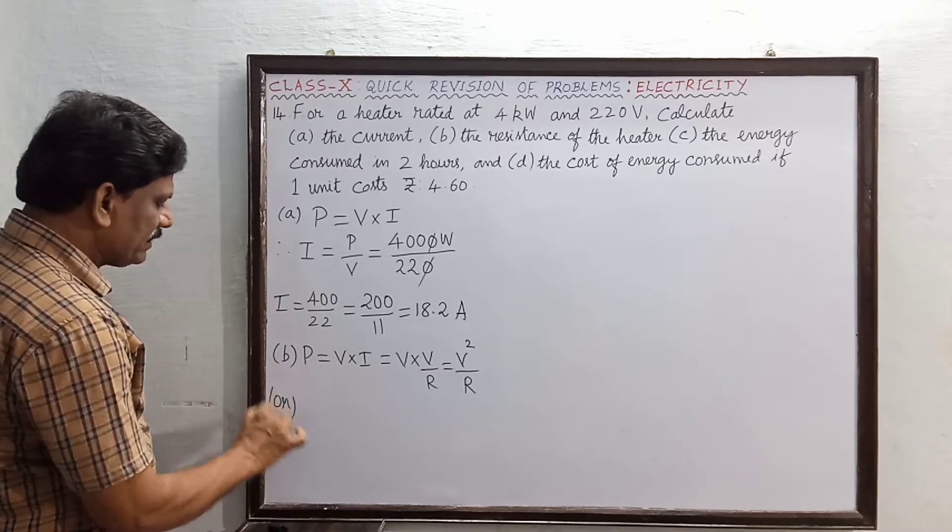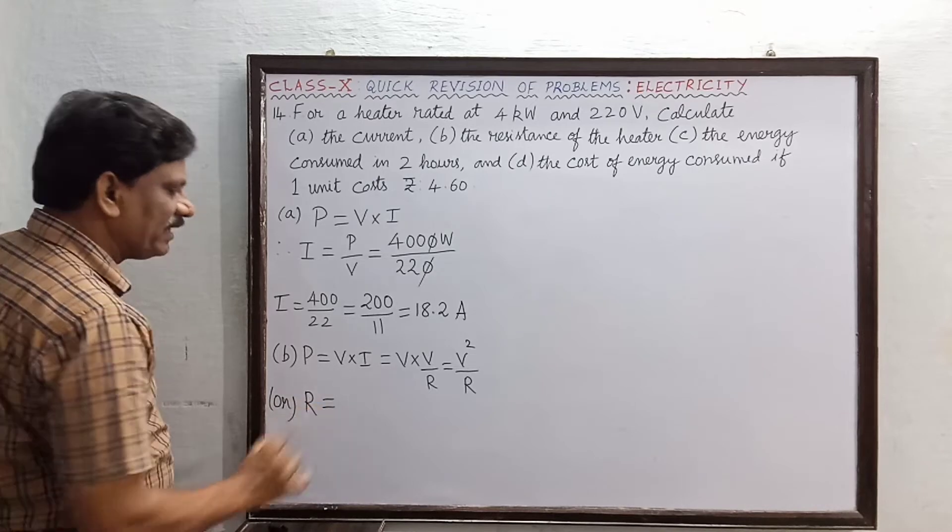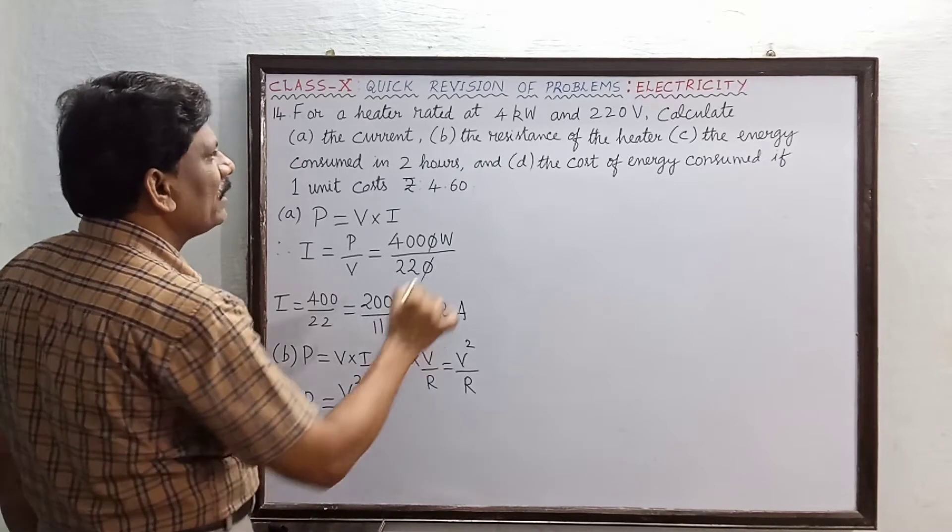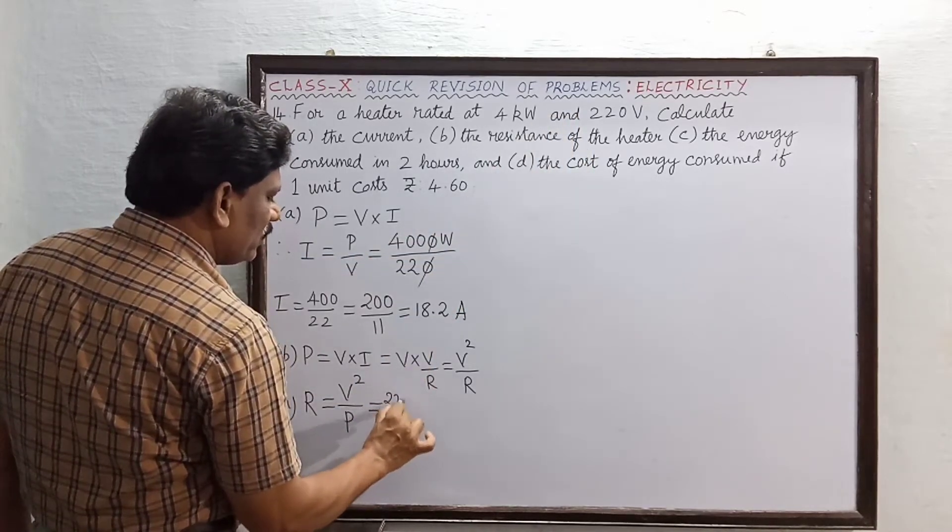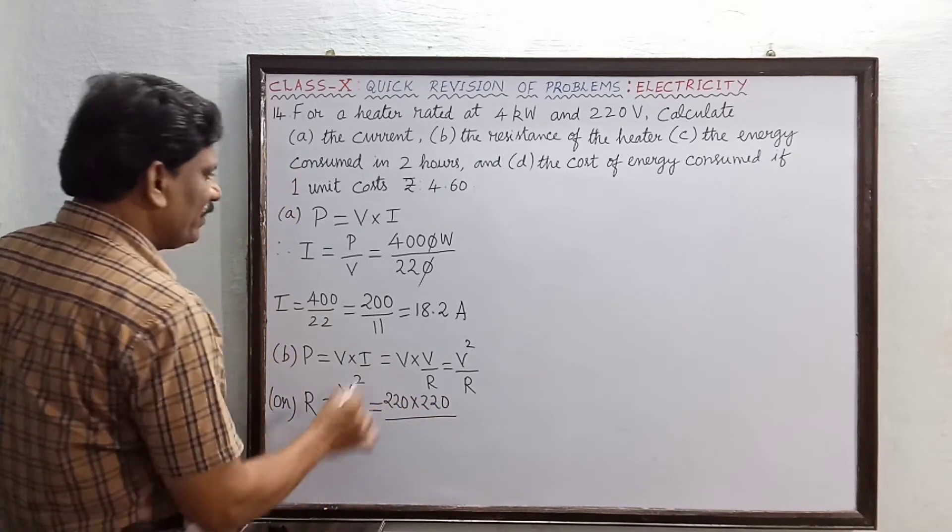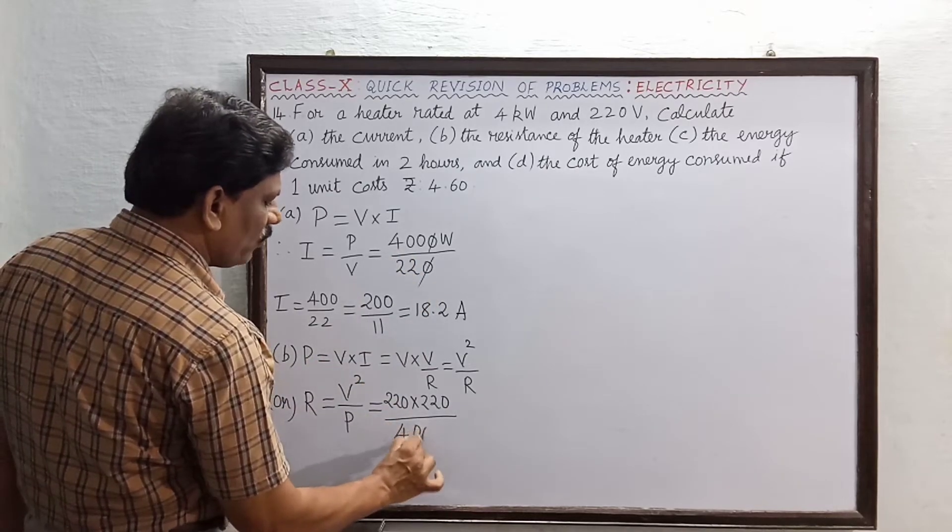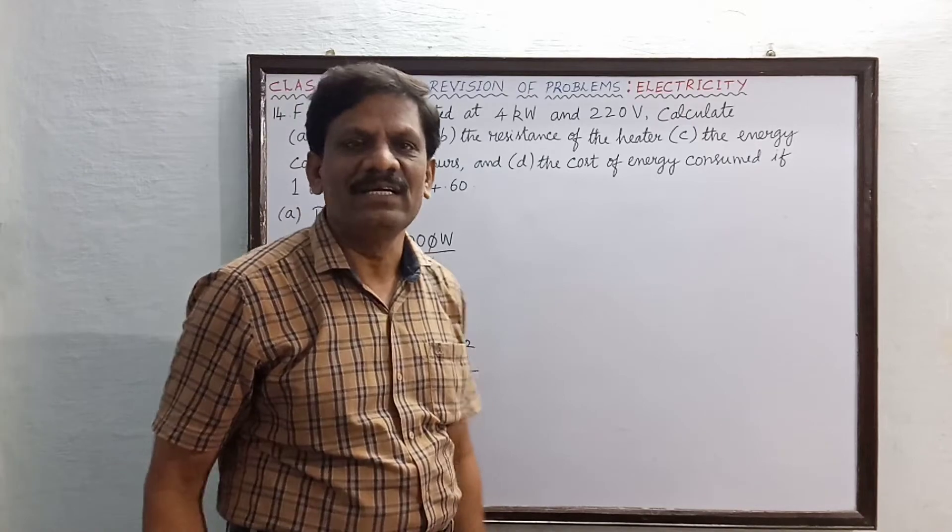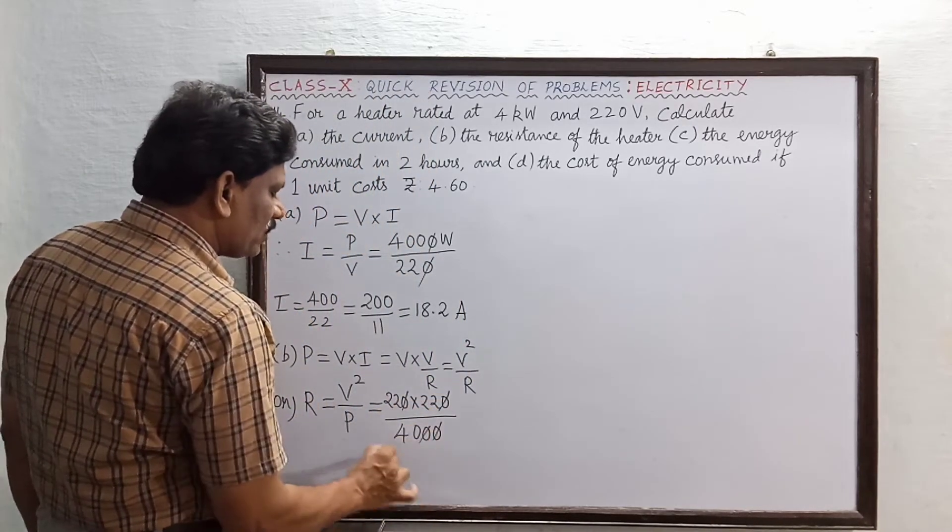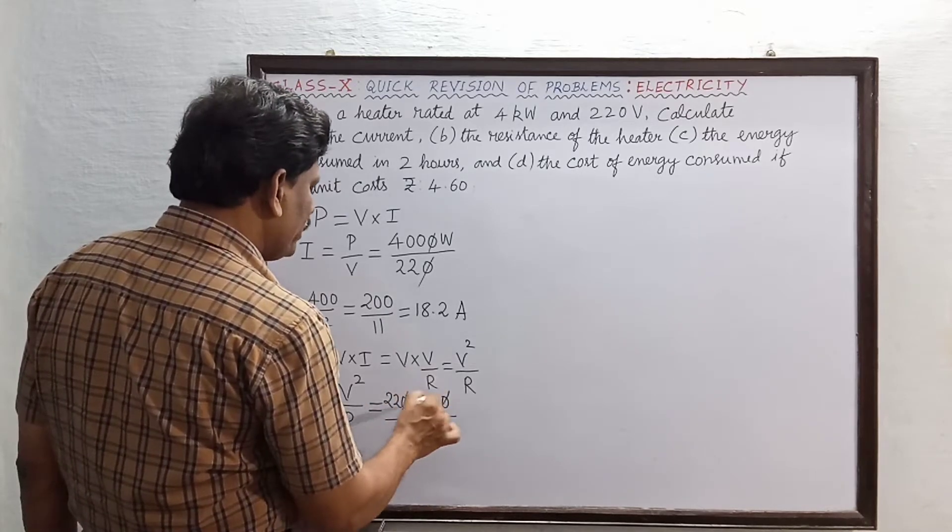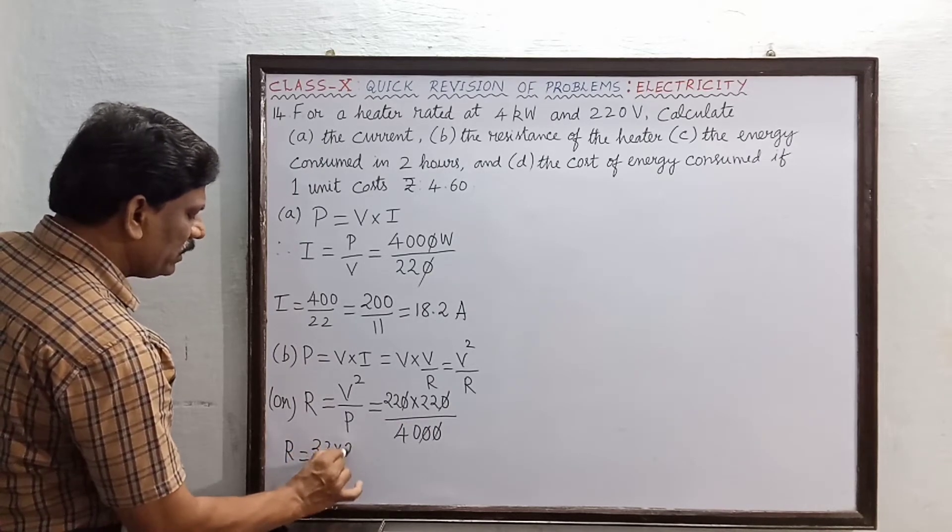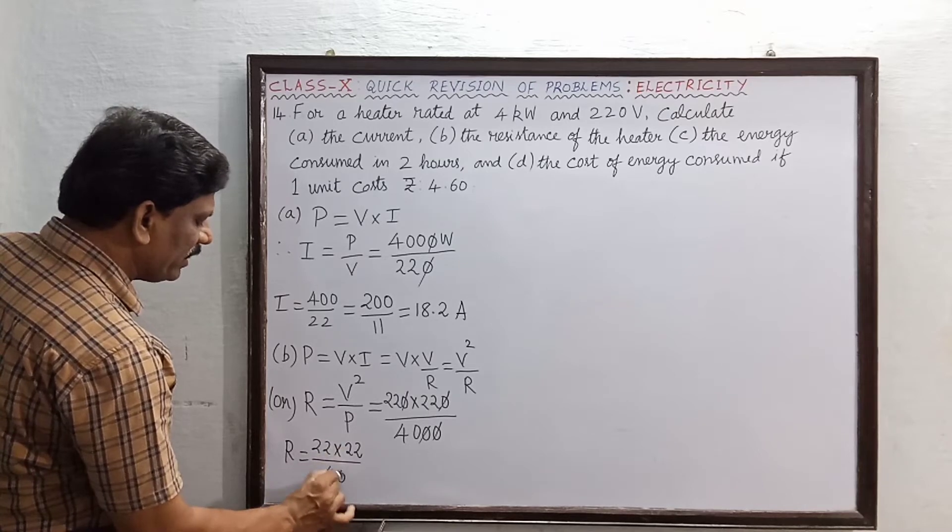Or the resistance capital R is taken on the left hand side, so this is equal to V square divided by P. This is V square. The voltage is 220, so this is 220 into 220 divided by the power P is 4000. Now these two zeros can be cancelled first, so that this is equal to 22 into 22 divided by 40.